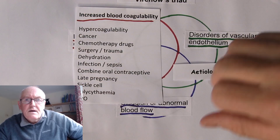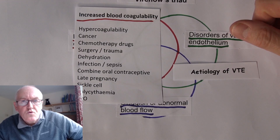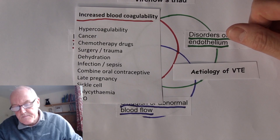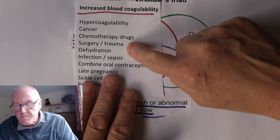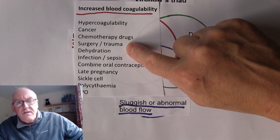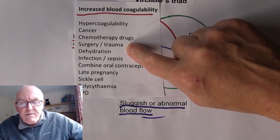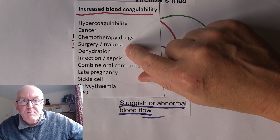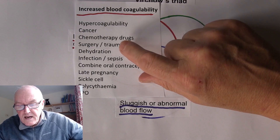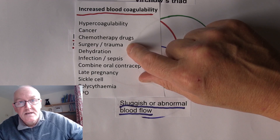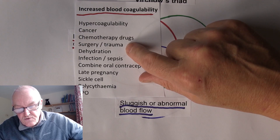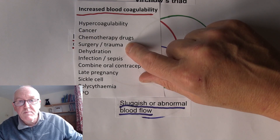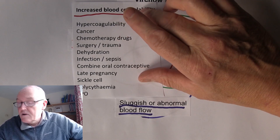To compensate for platelet depletion, the bone marrow produces lots of new, young platelets — young thrombocytes. Thrombocytes and platelets are exactly the same thing. So after blood loss from surgery or trauma, a few days later there will be more young platelets than in the normal physiological situation. These young platelets are more sticky and more likely to initiate coagulation than older platelets. So after surgery and trauma, the increased population of young platelets can increase the possibility of the blood coagulating.